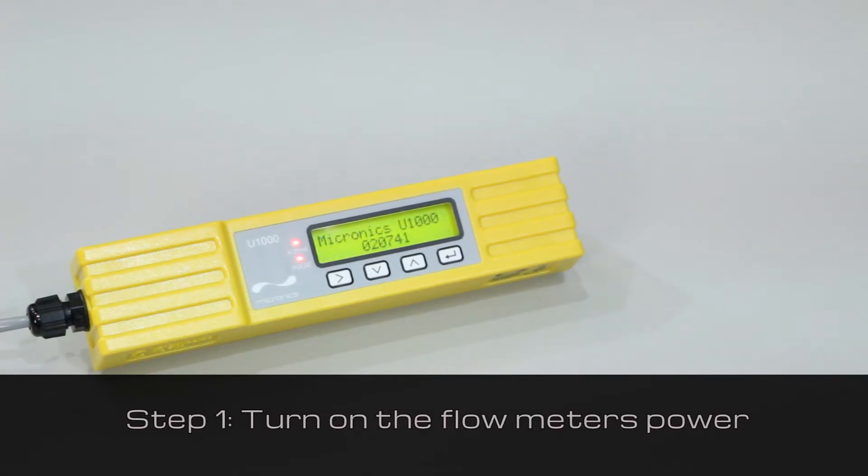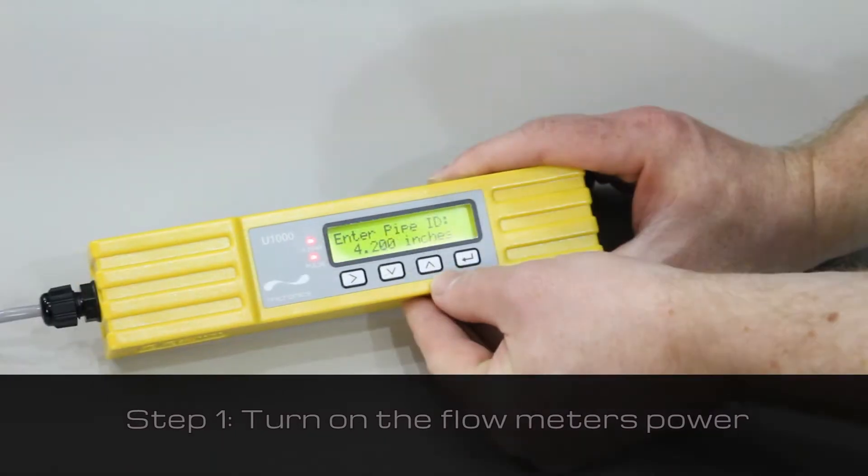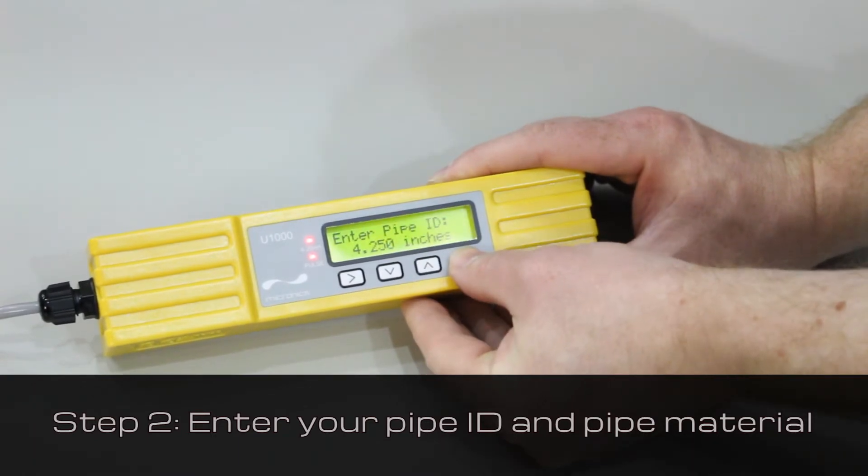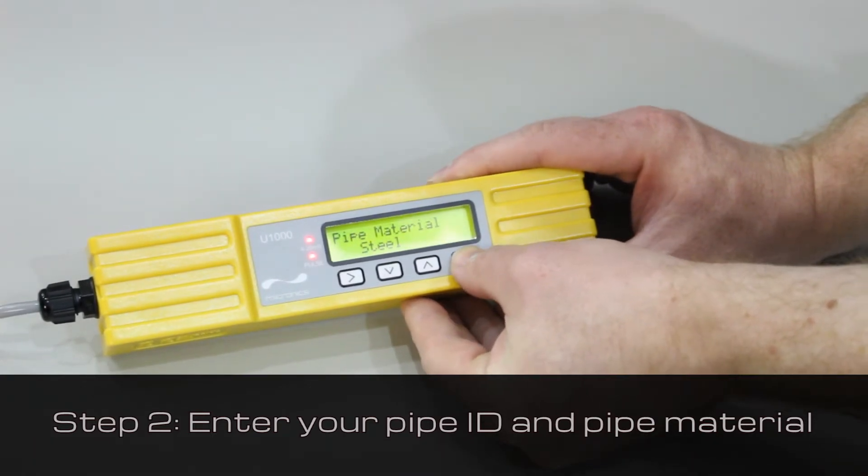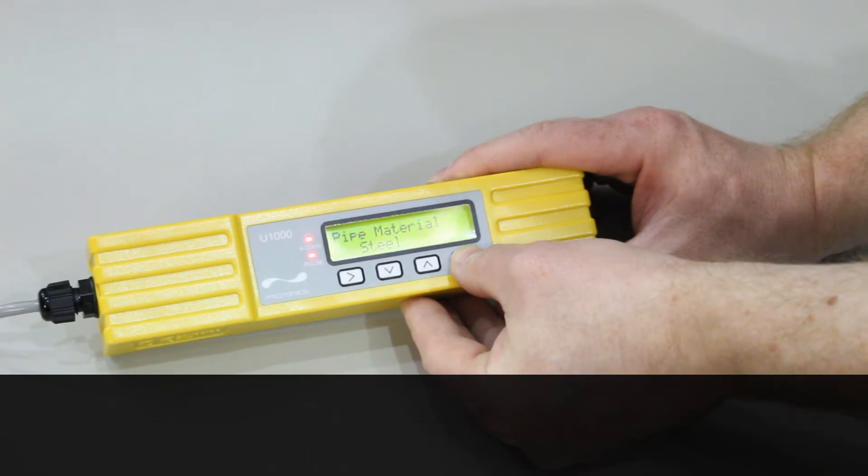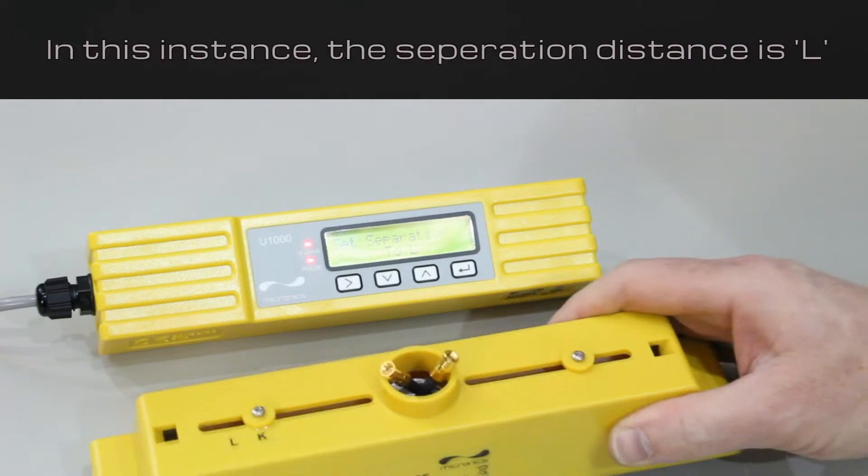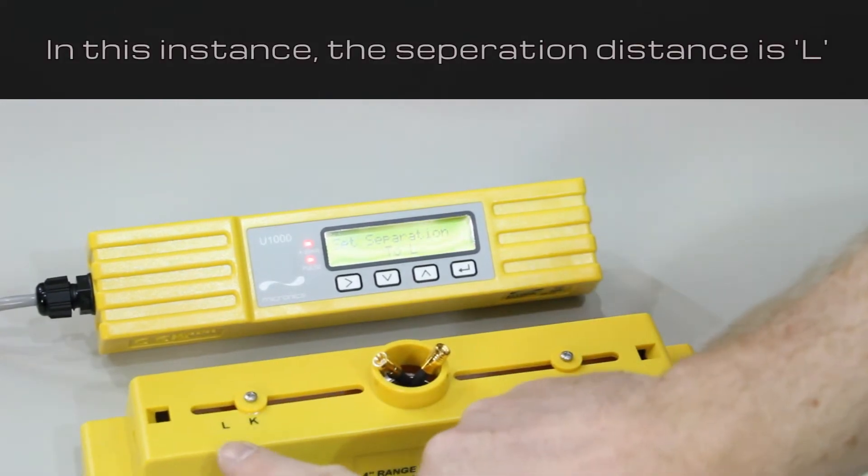To begin, turn on the power to the flow meter. Enter your pipe ID and pipe material. The meter will then tell you which separation distance you need to set the guide rail to. In this instance, we'll be setting it to L.